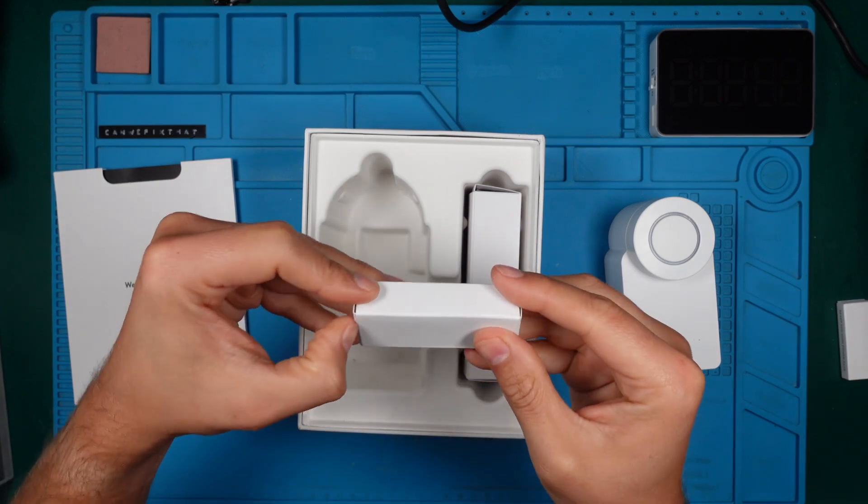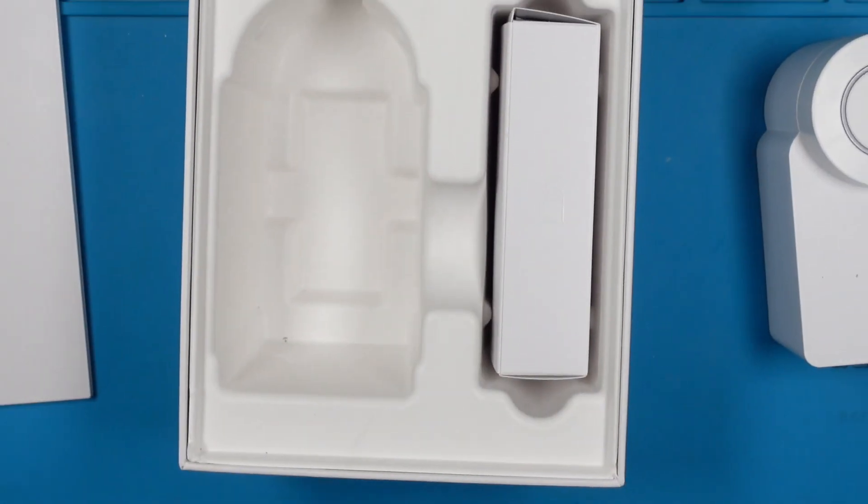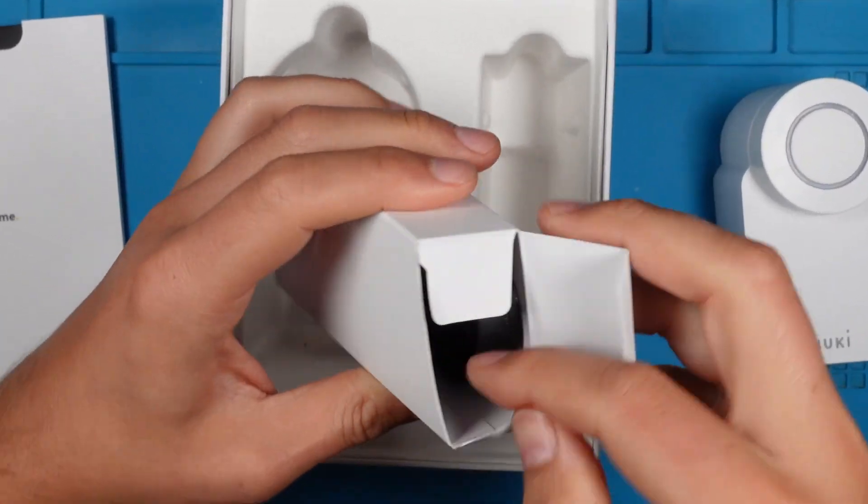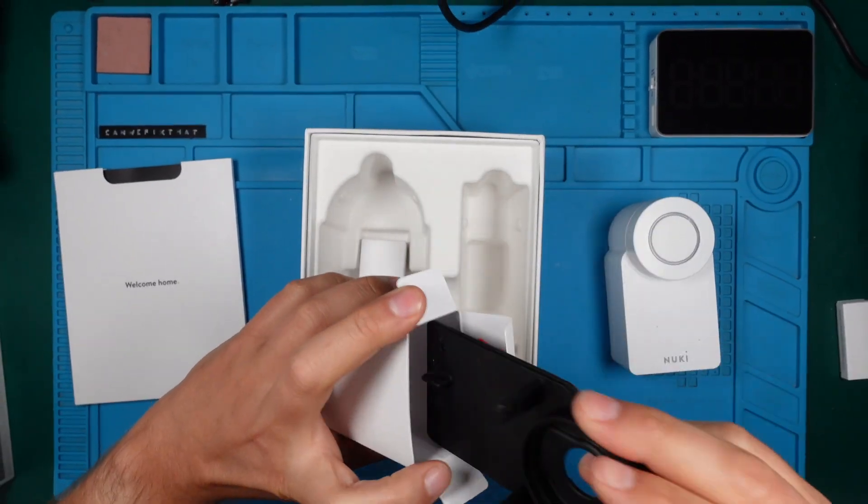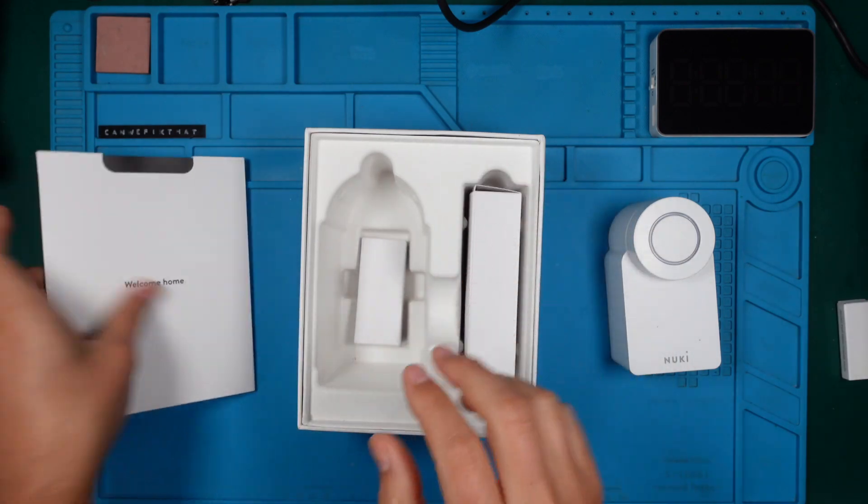What's inside this little box? Nothing. What about this one? This is the mounting plate for the lock. We don't need this because they are backward compatible and I have an older Nuki mounted already.